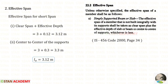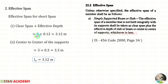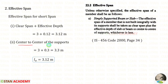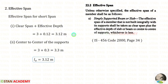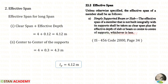Now we are going to find the effective span. For the short span, from IS code page 34, we take the lesser of: clear span plus effective depth = 3 + 0.12 = 3.12 m, and center-to-center of supports = 3 + 0.3 = 3.3 m. The lesser is 3.12 m, so the effective span in the short side is 3.12 meter. Similarly, the effective span in the long side is 4.12 meter.